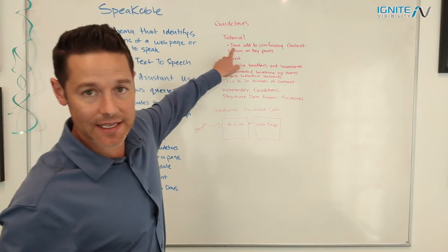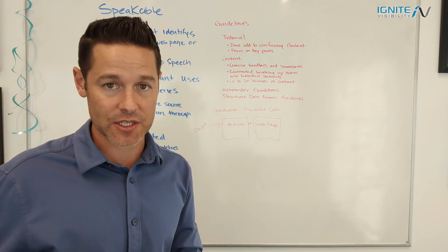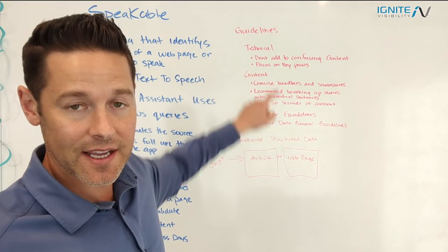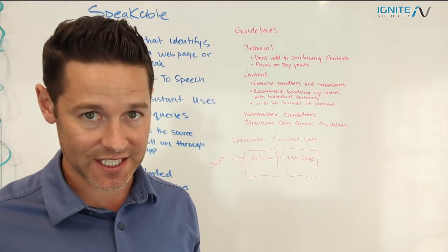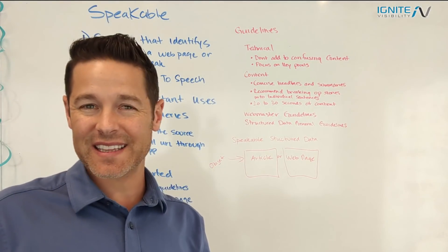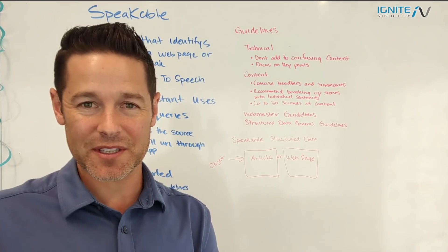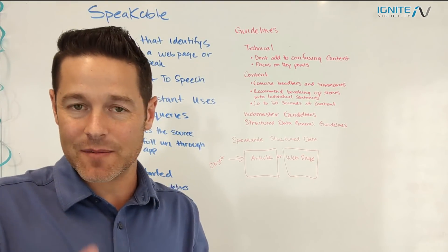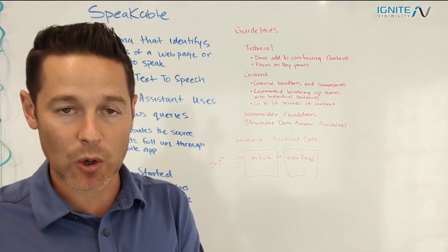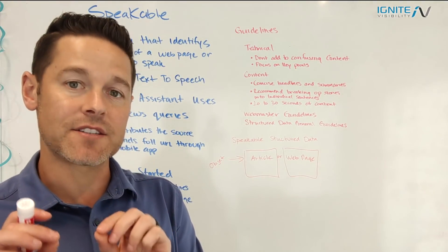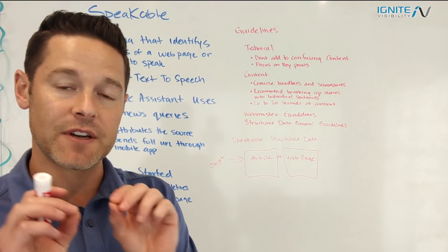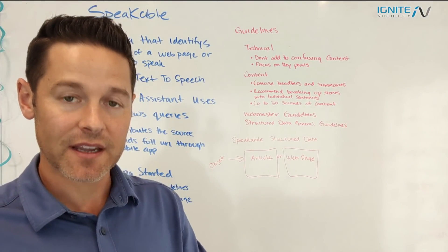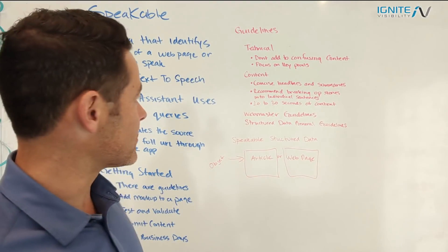These guidelines are actually somewhat substantial. On the technical side, you can't have any confusing content — things like dates that don't really match up, too many numbers, or things that seem jumbled. Those types of things won't get approved. The content needs to be very clear and very succinct. That's what Google wants — they want to be able to return things that make very clear sense to the user.